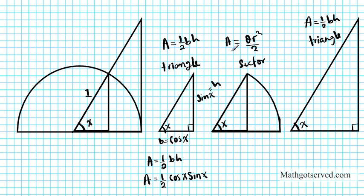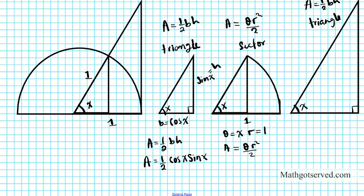Now let's look at the sector. The radius is 1 and the angle is x. Using the radian formula for the area of a sector — A = θr²/2 — with θ = x and r = 1, the area becomes x times 1 squared over 2. When simplified, the area of the sector is x over 2.